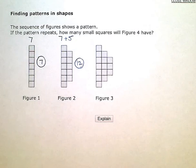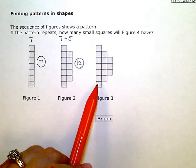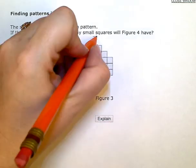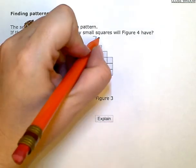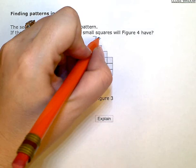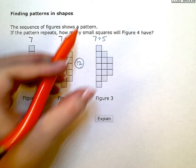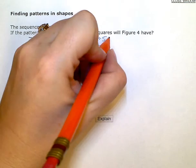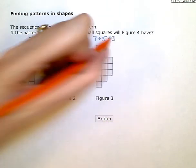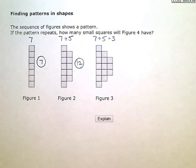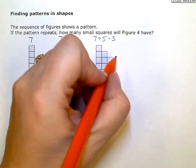So figure 3 is going to be the 7 from the first figure, the 5 that were added in the second figure, and now I'm adding a row of 3. Figure 3 will have a total of 7 plus 5 plus 3, or 15.